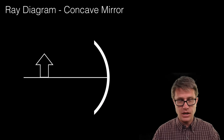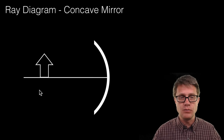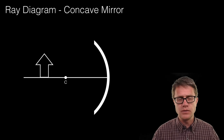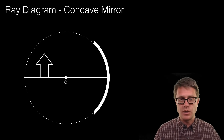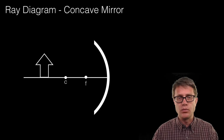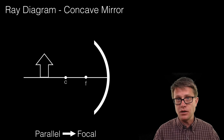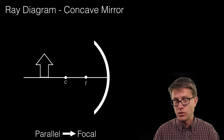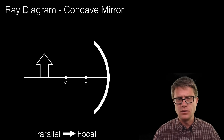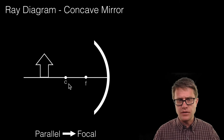Now let us move on to a concave mirror. Concave — remember we are going into a cave. The object is over here and the observer is somewhere out here looking at the image. For a concave mirror we have to define a couple of points. First, the center of curvature — imagine that as a center, so the radius to the mirror goes right back to that center point. We also add a focal point, which is half of the center of curvature. You will sometimes see this written as f and 2f.